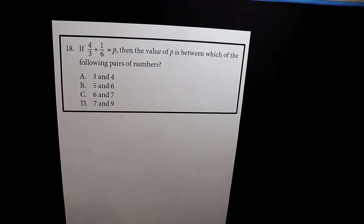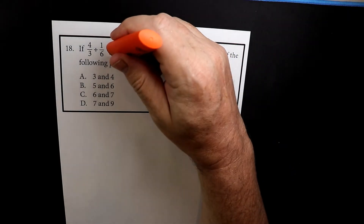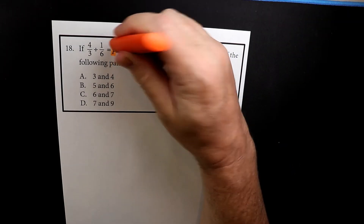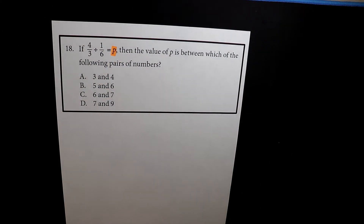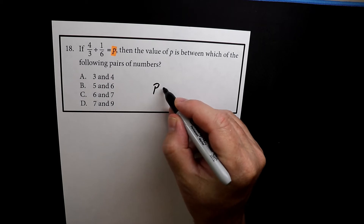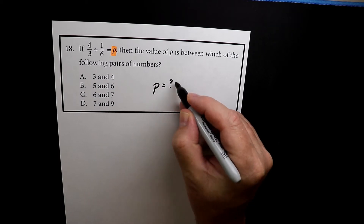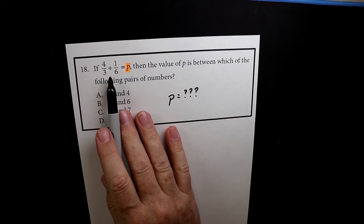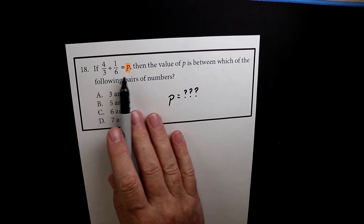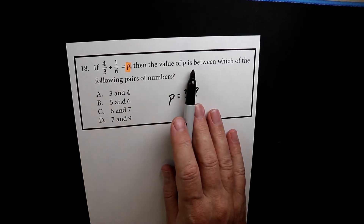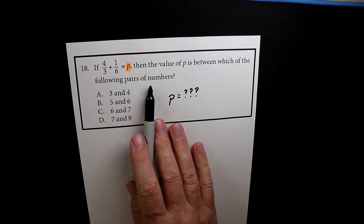This is number 18. Here you see a bunch of fractions and also a variable. Once you get into algebra you'll see a lot of these — X's and Y's and Z's. In this case you see the letter P. P is an unknown; we don't know what it equals, so P equals a mystery. The problem reads: if 4 over 3 divided by 1 over 6 equals P, then the value of P is between which of the following pairs of numbers?